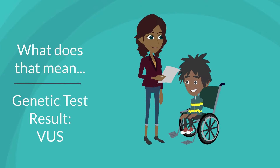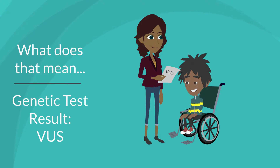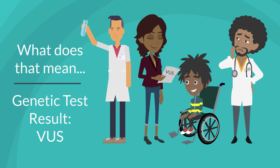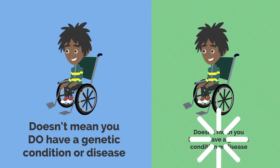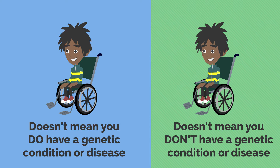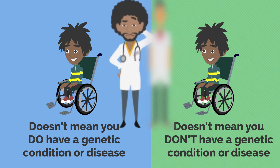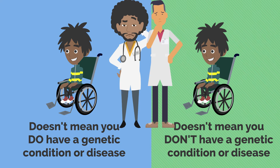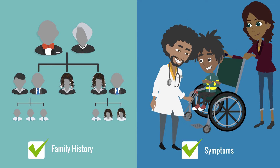What does that mean for your symptoms or your diagnosis? If you get a genetic test result back that says you have a variant of uncertain significance, that means the doctors and scientists don't know yet if your spelling error causes a specific genetic diagnosis or disease. This doesn't mean you do have a genetic condition or disease, but it also doesn't mean that you don't. Doctors and scientists simply don't have enough information yet to know. Doctors will use family history and symptoms to address your current medical concern, and in the future, doctors and scientists may know more about your variant.